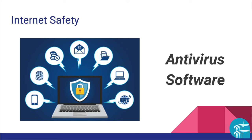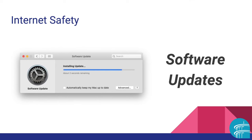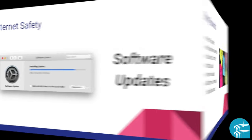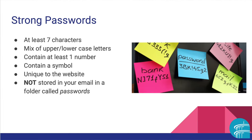Antivirus software is software that protects your computer from viruses or malware. Software updates are used to provide fixes to flaws in the software in addition to enhanced user features. It's a good idea to stay updated on software updates that your computer or device recommends.